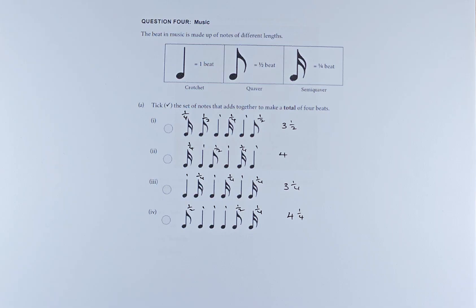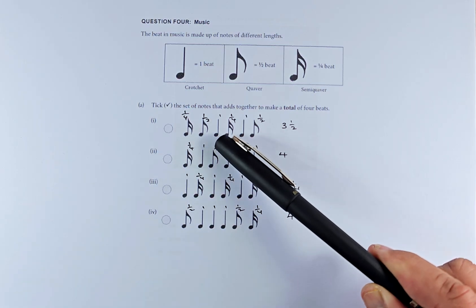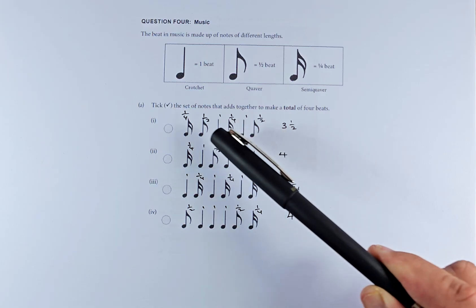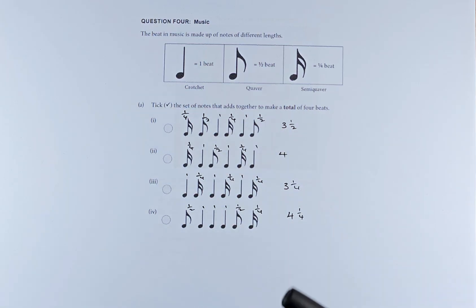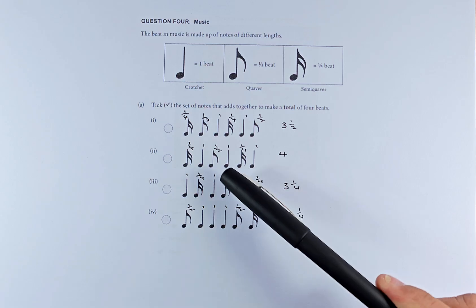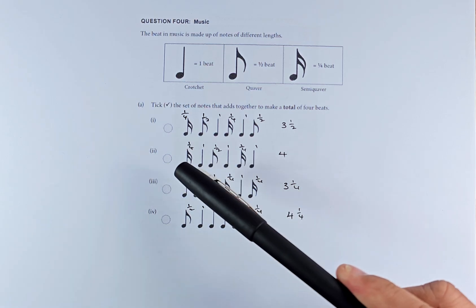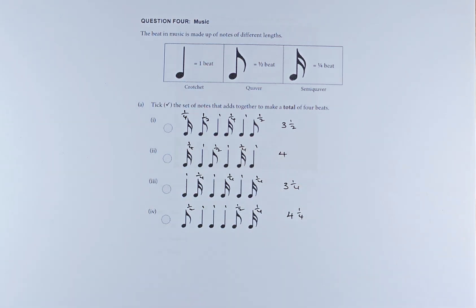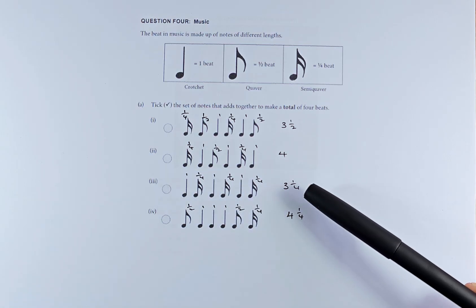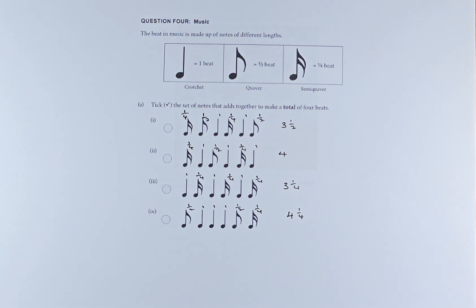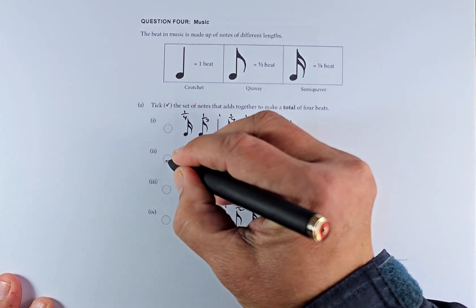Take the set of notes that add up to a total of 4 beats. I've done the calculation before. If this is 1, 2, then this is 3, 3 and a half, so that will be a 3 and a half beat. In the second example, 1, 2, 3, this is a half, and this is a quarter, so half plus another quarter, another quarter, you make it another whole. So 3 plus 1 more is 4, and the other 2 is 3 and a quarter, 4 and a quarter. So the question asks you which of them will make a total of 4 beats. The answer is outcome 2.